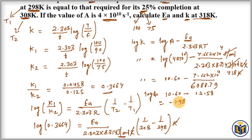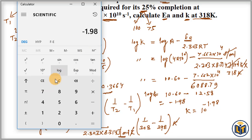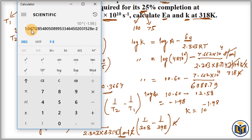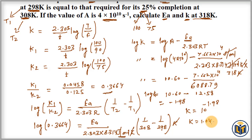Taking the antilog: K = 10^(−1.98) = 1.047 × 10⁻² per second. The pre-exponential factor was given in per second, so the rate constant K is also in per second.